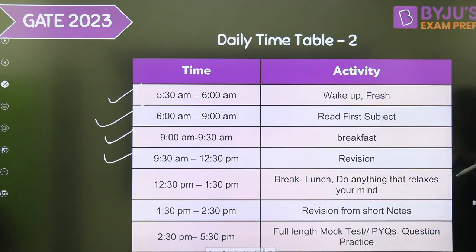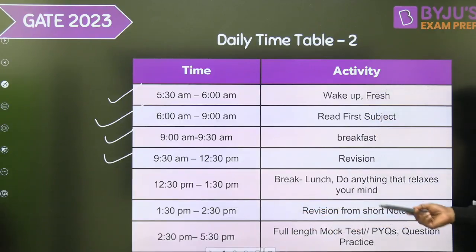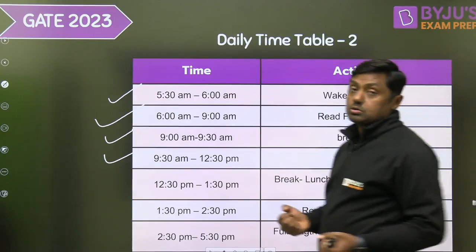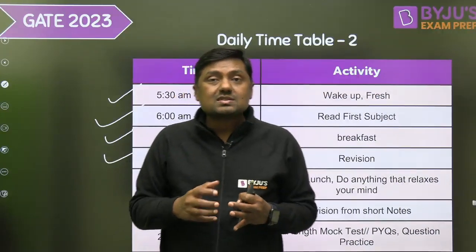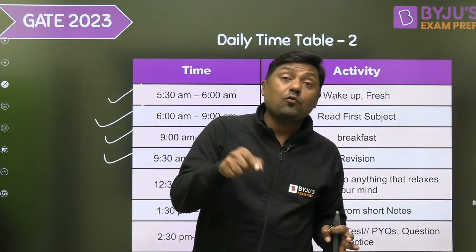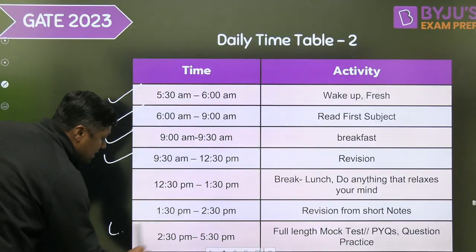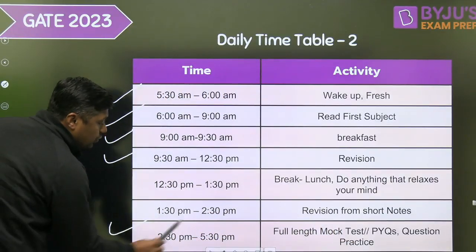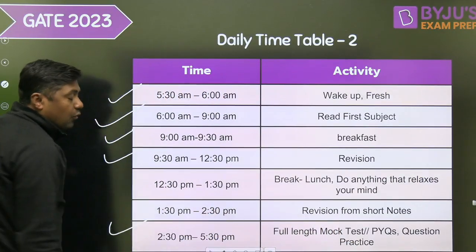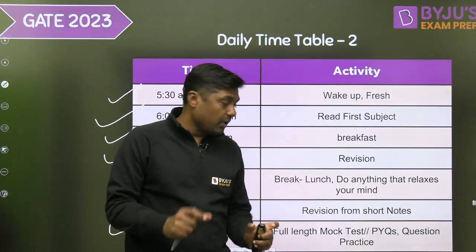From 12:30 to 1:30 PM, take a break — have lunch and do anything that relaxes your mind. Then from 1:30 to 2:30 PM, revise from your short notes, formula notes, and concept notes, just like preparation right before the exam. Then go for a full-length mock test like the actual exam from 2:30 to 5:30 PM — 3 hours with your virtual calculator and scribble pad.